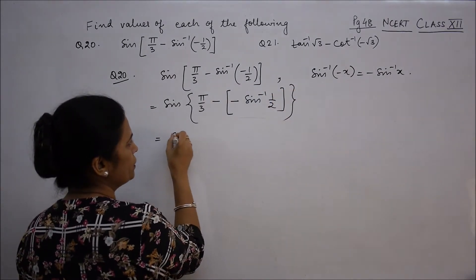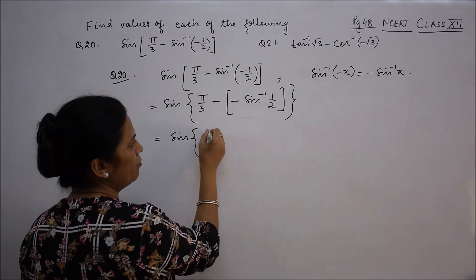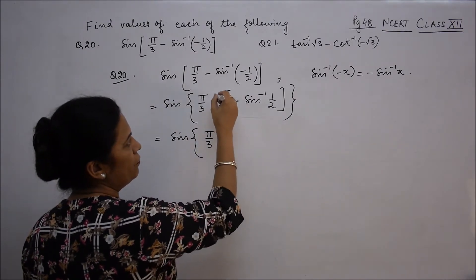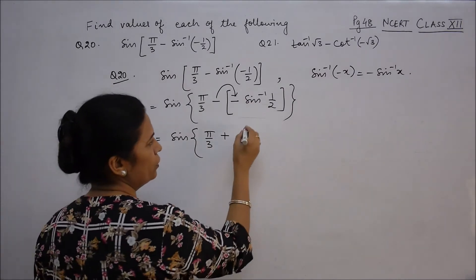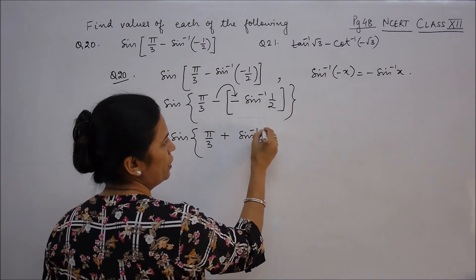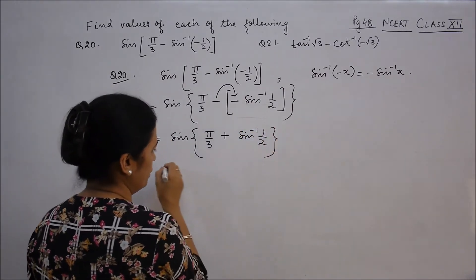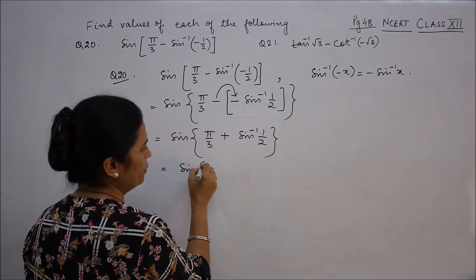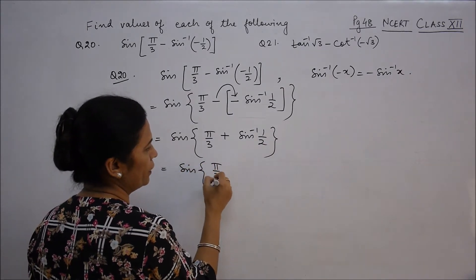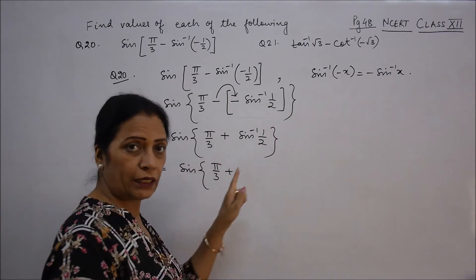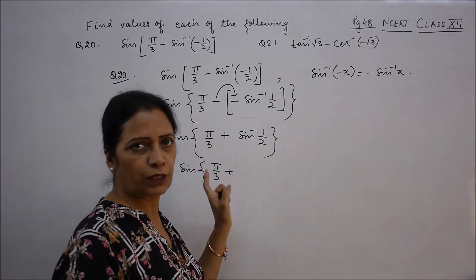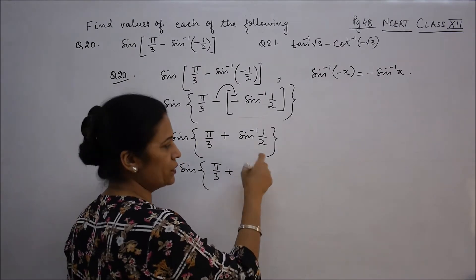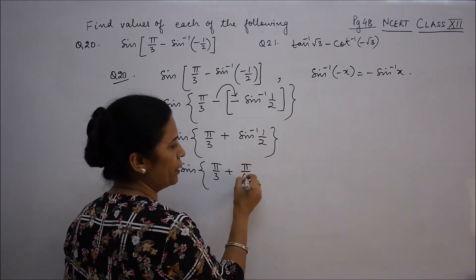Now it is sin 5π/3, minus into minus gives plus. So sin 5π/3 plus sin inverse 1/2. Now, sin ki value 1/2 kab hoti hai? If we look at radians, it is at π/6. So we get 5π/6.